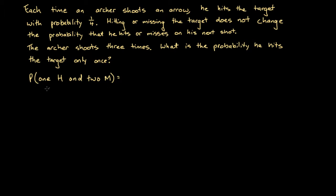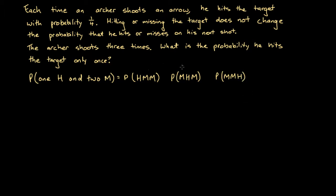This is the sort of problem where you're going to want to use a probability tree diagram, because there isn't just one event associated with this condition. There are a few different ways that our archer could hit once and miss twice. For instance, he could hit the first time then miss the second and third. He could miss the first time, then hit, then miss. Or he could miss the first two shots and then hit the third. We're going to sum the probabilities of these individual outcomes.